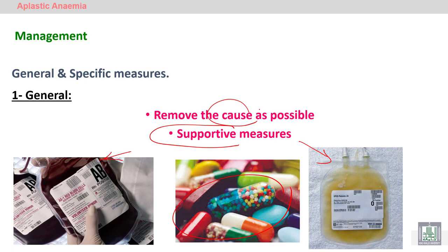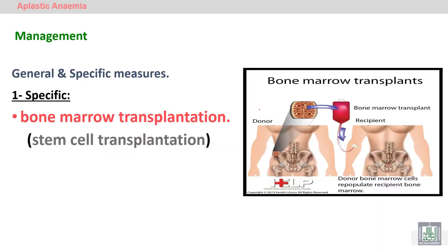A specific treatment for aplastic anemia is bone marrow transplantation or stem cell transplantation. Because the defect is in the stem cells, we have to transplant new stem cells.